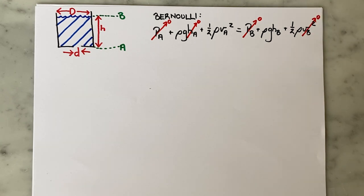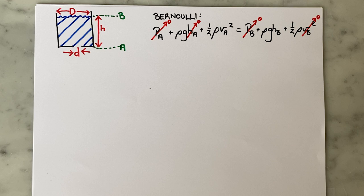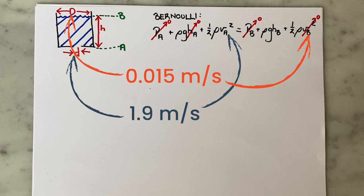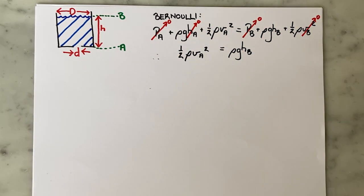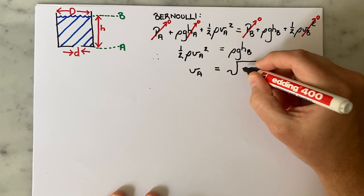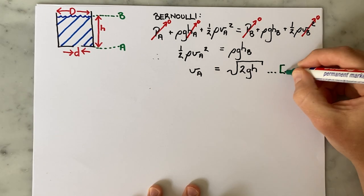Then we assume the velocity of the liquid level inside the tank is negligible. After I performed the experiments, I actually checked this assumption for the biggest drain hole and the fastest flow rate. For a velocity of 1.9 meters per second through the drain hole, the level in the tank at its peak is moving at 0.015 meters per second. So it's a reasonable assumption to get rid of this velocity term. And so we get an expression that says the velocity through the drain hole is only a function of the height of the liquid in the tank.